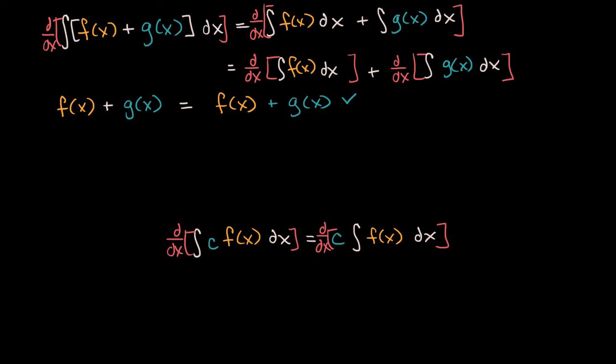So the left-hand side will clearly become c times f of x. The right-hand side is going to become, well, we know from our derivative properties the derivative of a constant times something is the same thing as the constant times the derivative of that something.